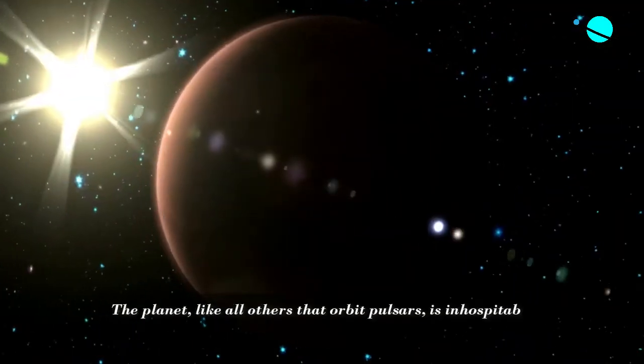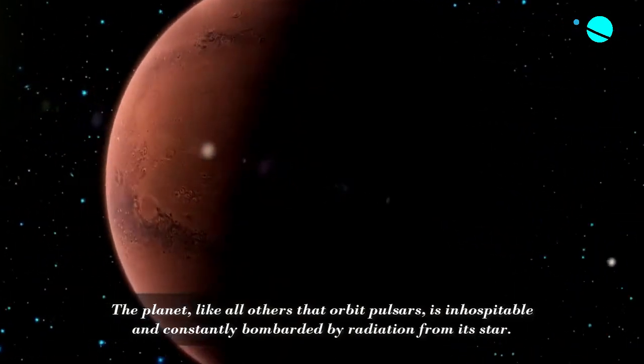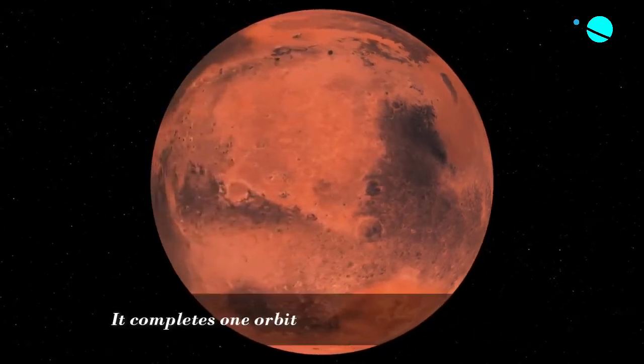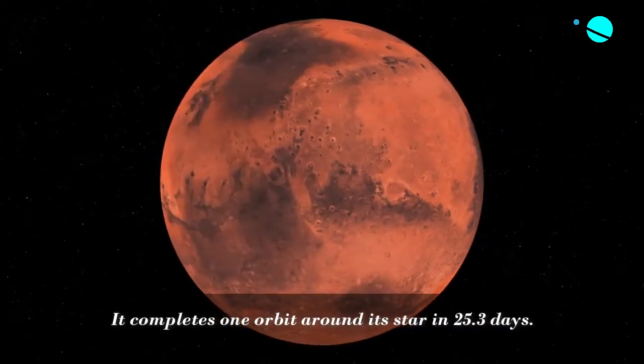The planet, like all other planets that orbit pulsars, is inhospitable and constantly bombarded by radiation from its star. It completes one orbit around its star in 25.3 days.